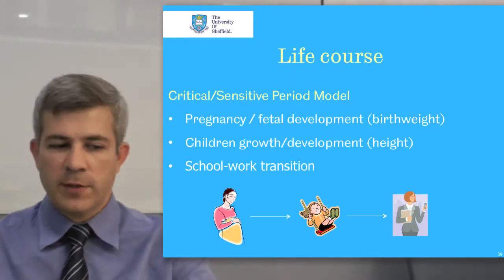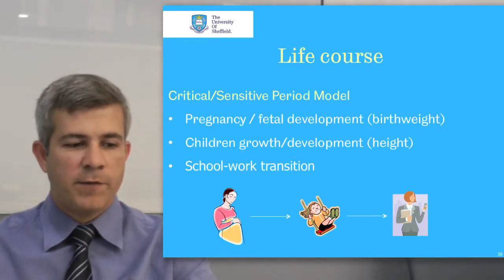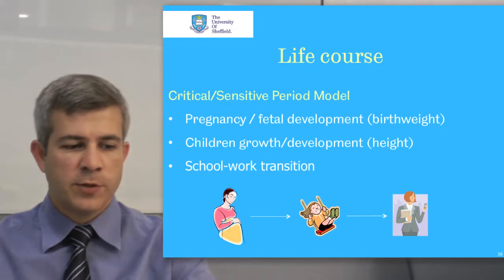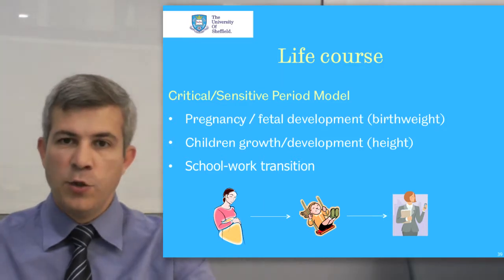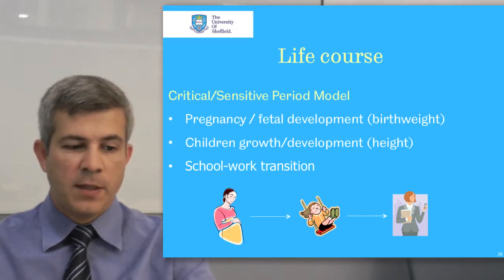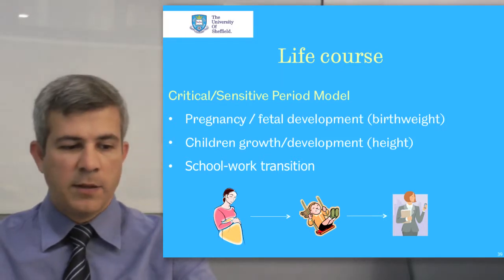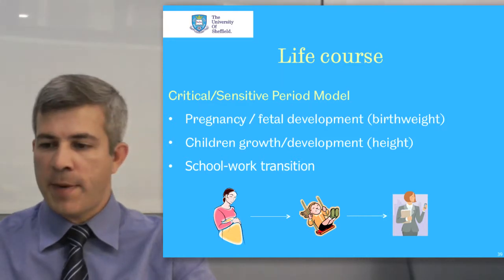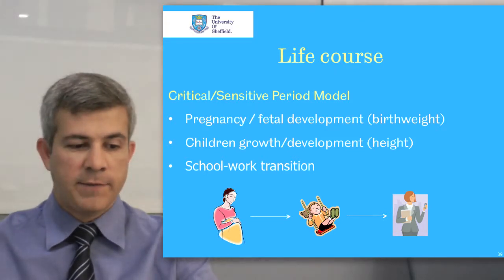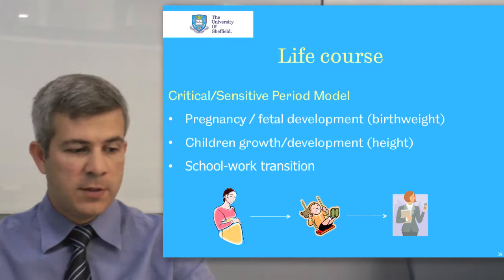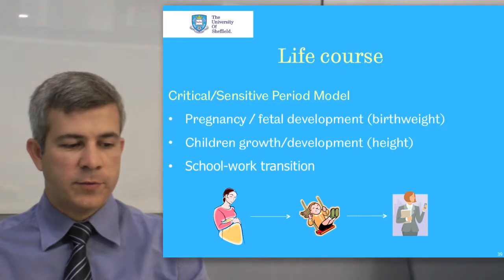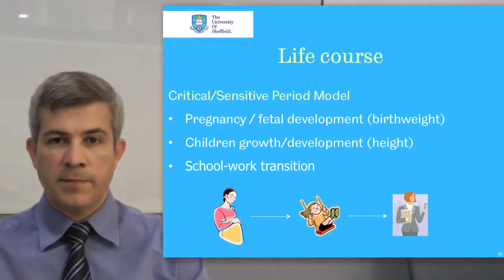The critical period model pays attention to the timing of an exposure and assumes that irreversible changes in body systems that occur during a particular vulnerable phase of life — usually during early development — have implications for later life. The basic critical period model, also known as a biological programming or latency model, underlies the fetal origins of adult disease hypothesis.